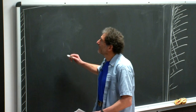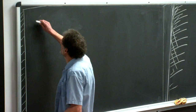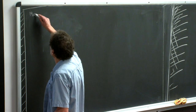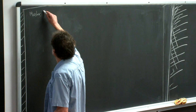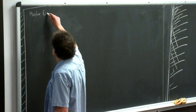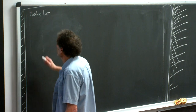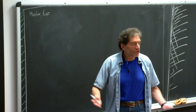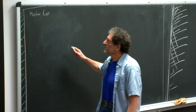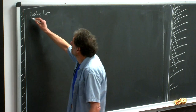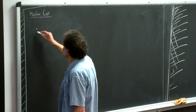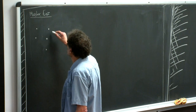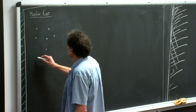Let me begin by first introducing something called the master equation. Most generally, I view the state of a system as being described by a set of points. This is the state space.